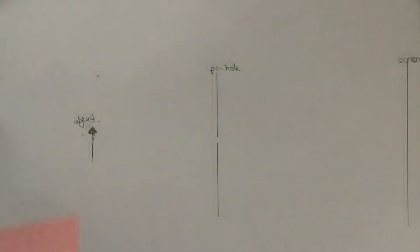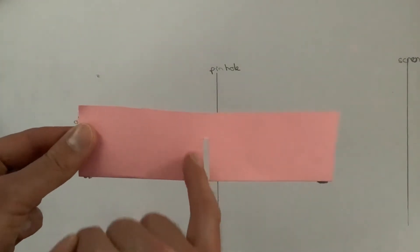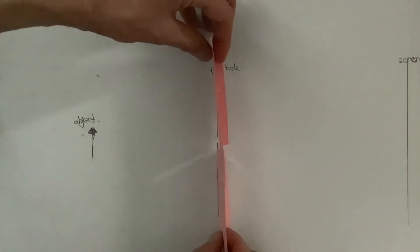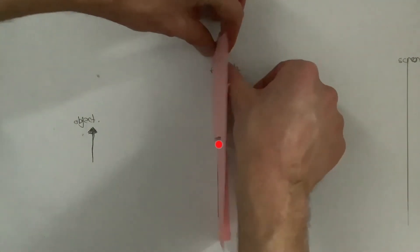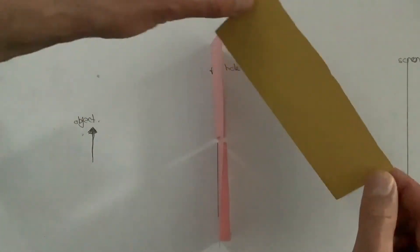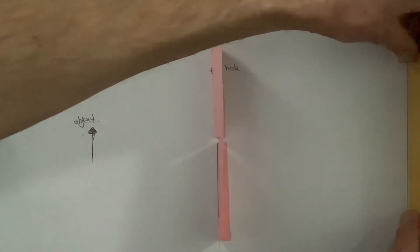I'm now going to use a ray box to shine some rays of light to work out what's going on. So, to represent the hole, I'm putting this little slit in the middle here, and then I'm going to put a little bit of card to be the screen over here.